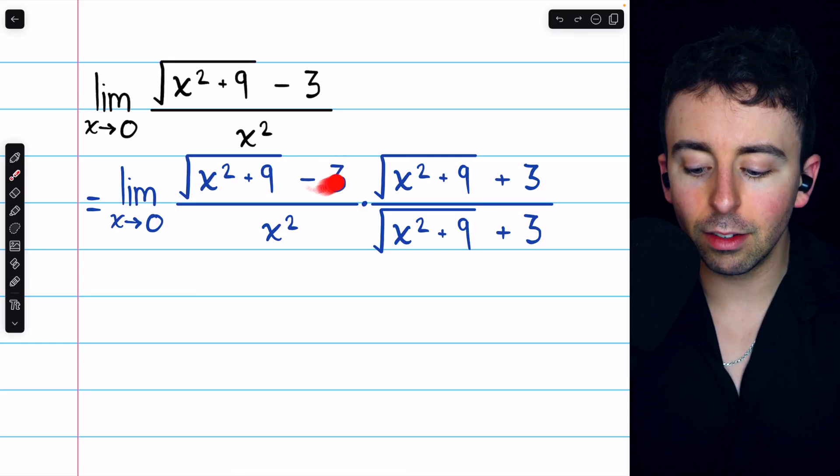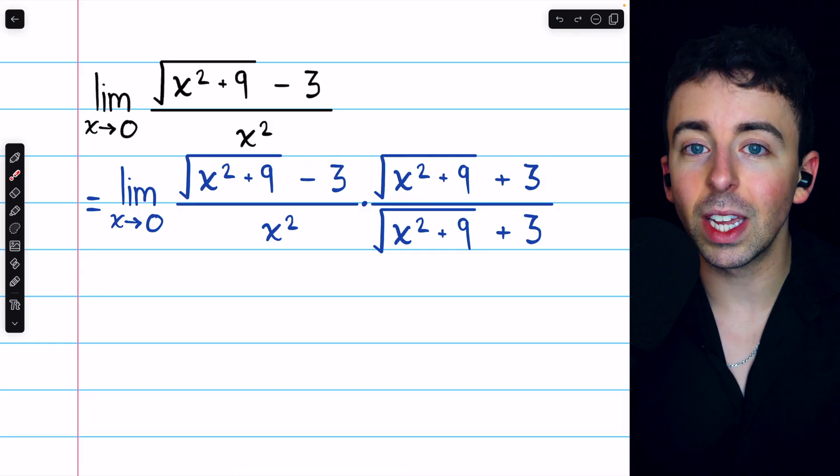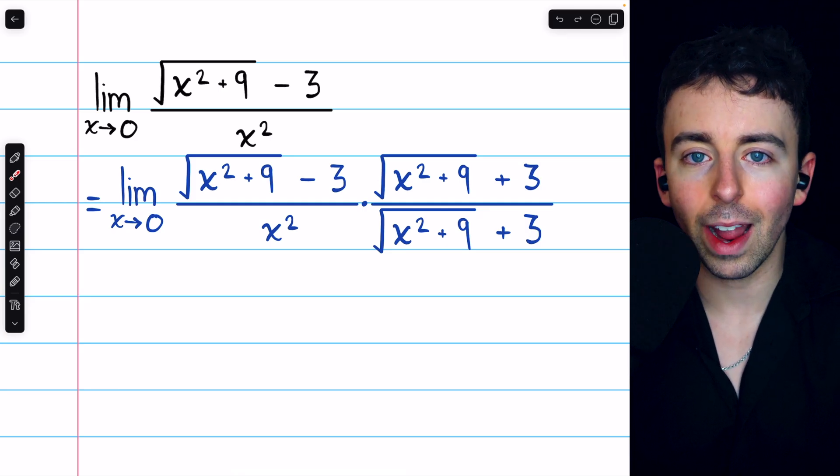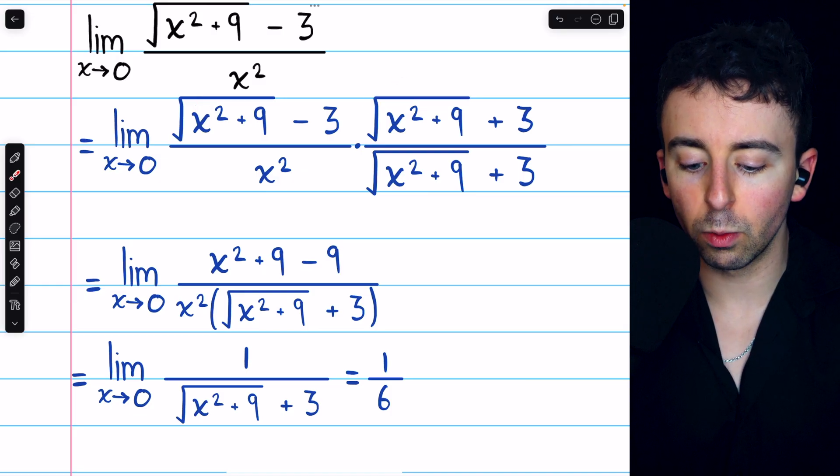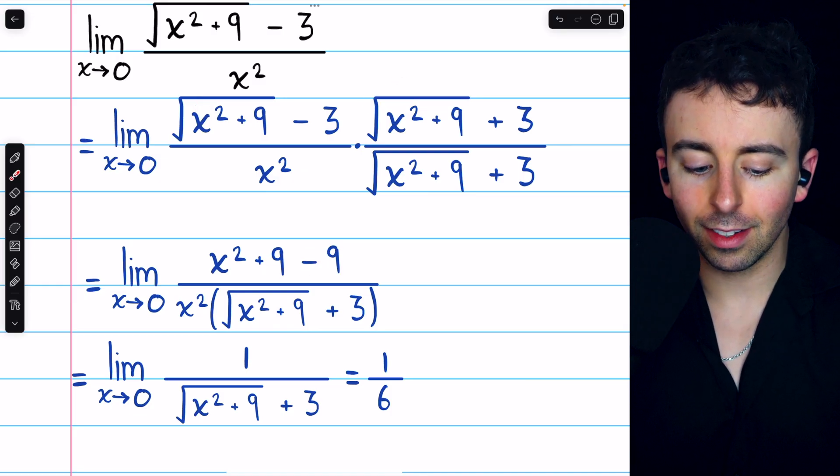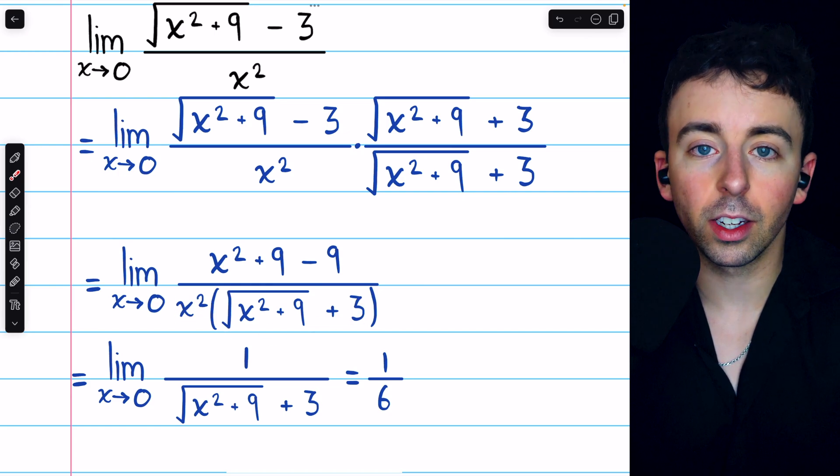So the only other term is minus 3 times plus 3, so minus 9. You see, we end up getting the difference of the squares. So it ends up looking like this: x squared plus 9, once those square roots cancel out, and then minus 9. And then in the denominator, we have these two terms, which we're not going to distribute.